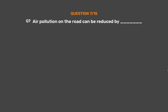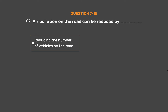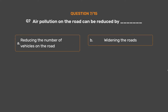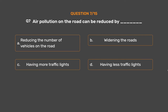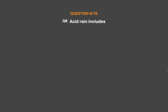Question number seven: Air pollution on the road can be reduced by — option A: reducing the number of vehicles on the road, option B: widening the roads, option C: having more traffic lights, option D: having less traffic lights. The correct answer is option A: reducing the number of vehicles on the road.